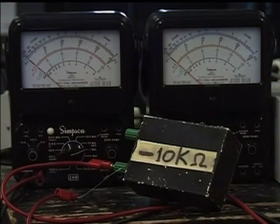Well, if this is a negative resistor, then it should have the property that the current through it should be in the opposite direction from the voltage applied, but it should still be proportional to the voltage. Let's check that out.